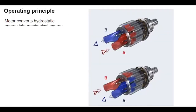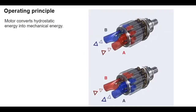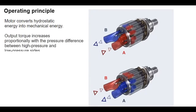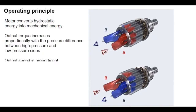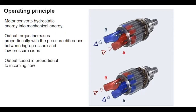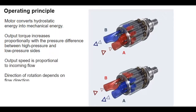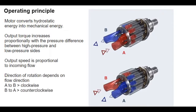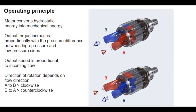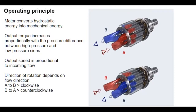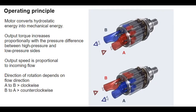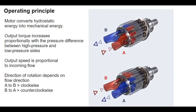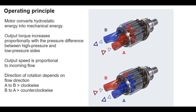The cylinder bores are supplied with hydraulic fluid through the port plate and control plate. The pistons in the cylinder bores perform a stroke. Pressure on the piston causes it to pass down through the angled disc and catch the cylinder. The cylinder rotates with the drive shaft, producing output torque.